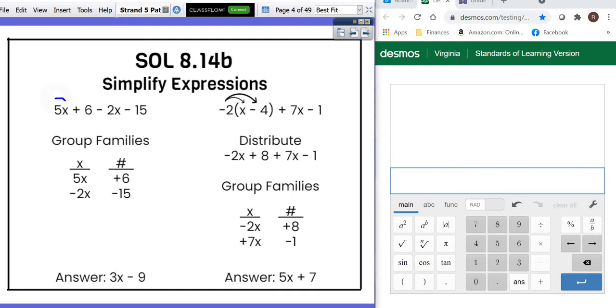So you have to find, okay, here's my 5x, and here's a negative 2x, and we're going to put them together, and if you notice, 5 minus 2 is 3x. Then you have a positive 6 and a negative 15, and when you put those together, you get negative 9, and you end up with 3x minus 9.